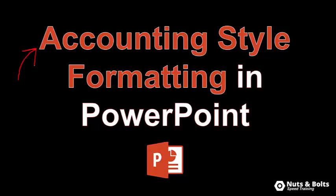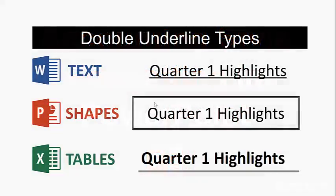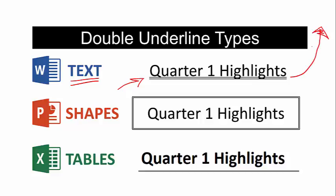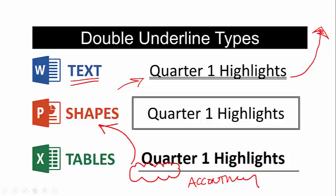Hey Speed Demons. How do you create the accounting style formatting for your PowerPoint tables? I'm not looking for this double text underline — if you didn't see that shortcut video, there is a shortcut for all three programs you can use, which I'll put in the upper right hand corner. This time what we're looking for is this full cell double underline for your tables, which is often called the accounting style formatting.